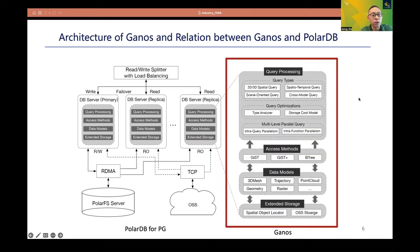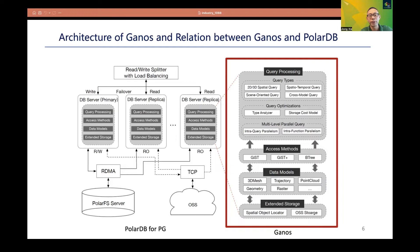The figure shows the architecture of GANIS and its relation with PolarDB. PolarDB adopts a shared storage architecture that decouples compute from storage. At the computation layer, PolarDB has one primary node supporting both read and write, and many read-only nodes. GANIS is the spatial database engine of PolarDB, enabling it to store, index, and query MDS data. GANIS extends PolarDB in four aspects: data models, access methods, extended storage, and query processing.